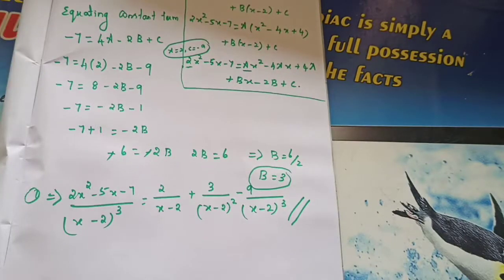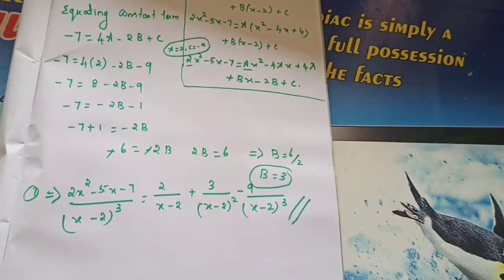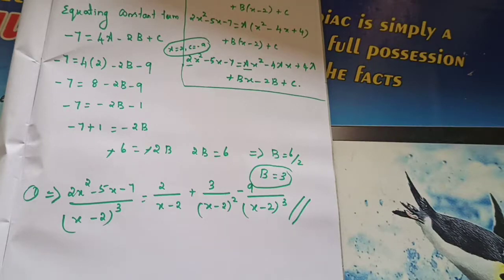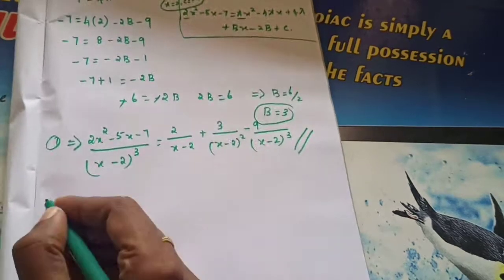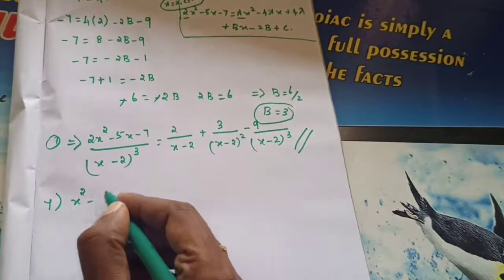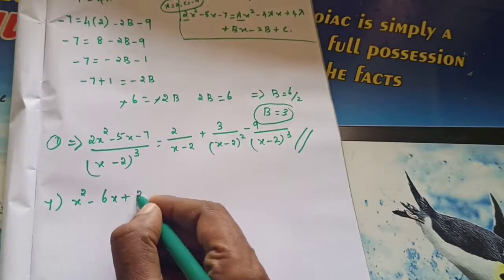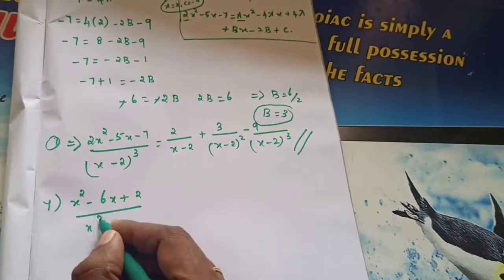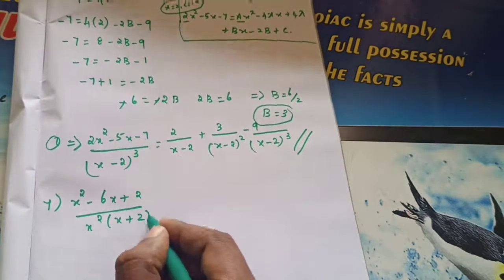Have you got it? I hope you got the idea. If it is cube times — 3 times repeated — that is A by, B by, C by for each power. Now let us move to Problem Number 7: x squared minus 6x plus 2 divided by x squared into x plus 2.